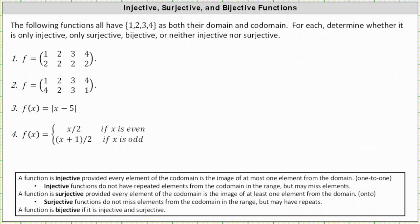The following functions all have the set with elements one, two, three, and four as both their domain and codomain. For each, determine whether it is only injective, only surjective, bijective, or neither injective nor surjective.